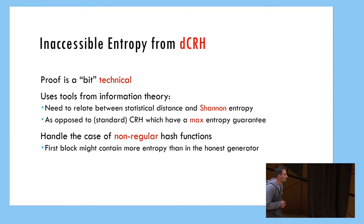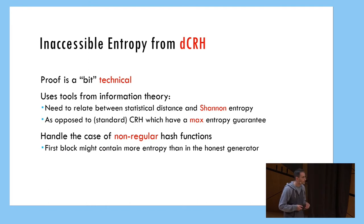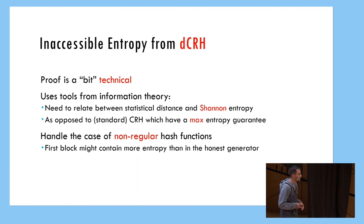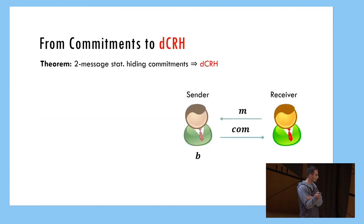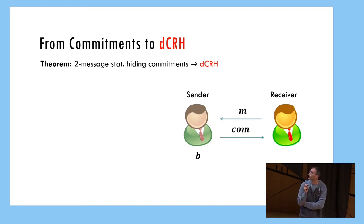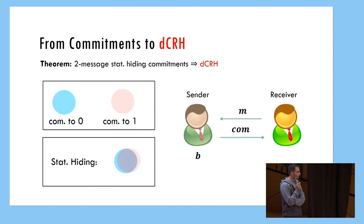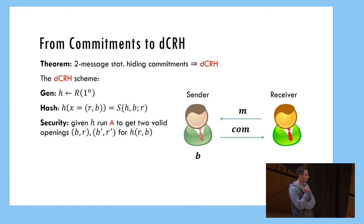The proof is a bit technical and uses tools from information theory. There is a big difference: we have to deal with Shannon entropy, as opposed to CRH or MCRH which have a guarantee on the max entropy. I don't have much time, so I'm going to skip this. The second result — two-message statistically hiding commitments imply DCRH — I'll also skip; the proof is quite easy.